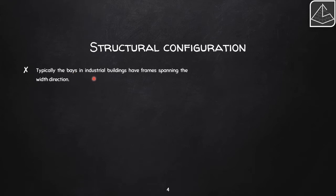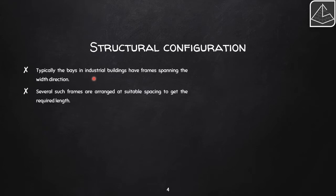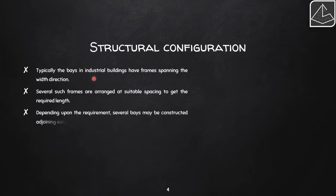Typically, industrial building frames span the width direction, with each bay using a portal frame arrangement. Several such frames are arranged at suitable spacing to get the required length. For example, if the frame width is five meters and frames are placed at four-meter intervals, five such frames give you a 20-meter length by five-meter width industrial building. Depending on requirements, several bays may be constructed adjoining each other.